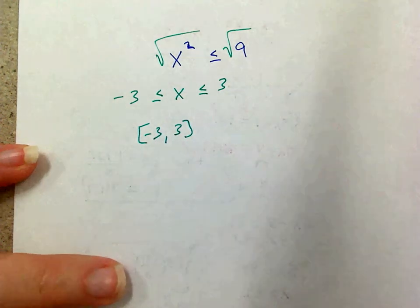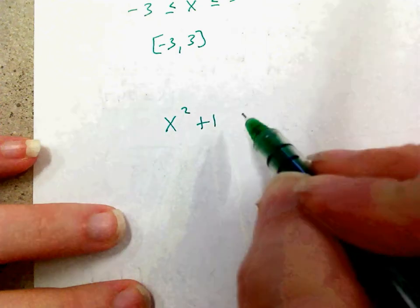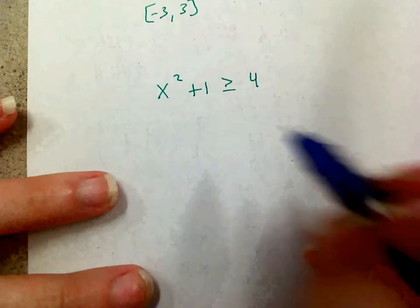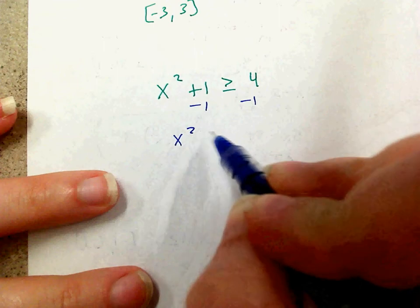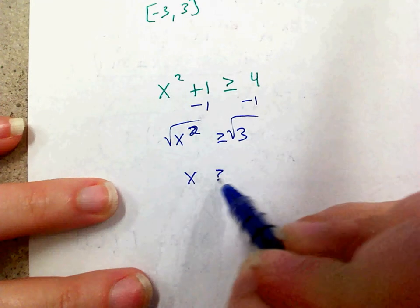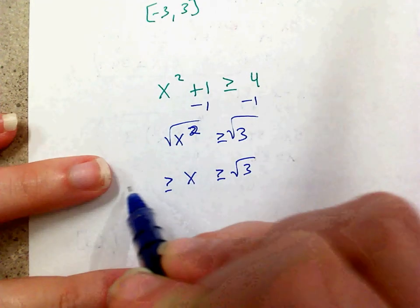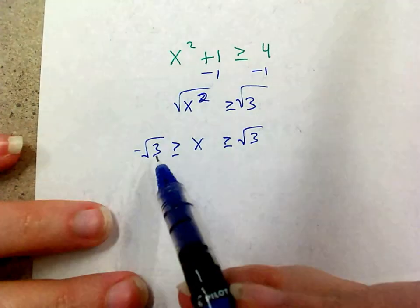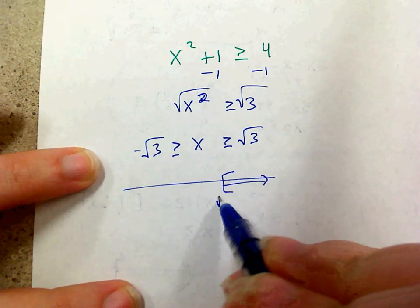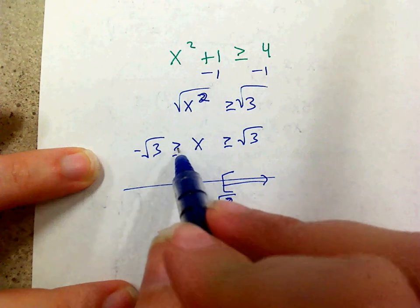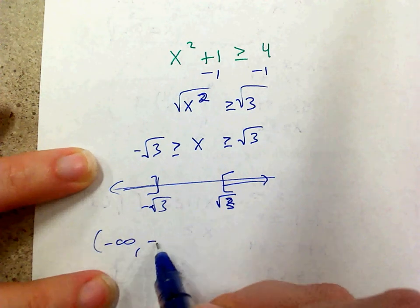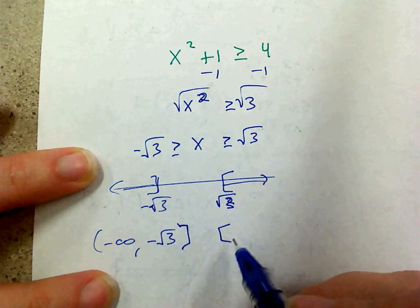If I were working x squared plus 1 greater than or equal to 4, I subtract 1: x squared is greater than or equal to 3. Take the square root: x is greater than or equal to square root of 3, or x is less than or equal to negative square root of 3. Negative square root of 3 is not greater than square root of 3, so this splits into two pieces: from negative infinity to negative square root of 3 with a bracket, then pick back up at positive square root of 3 and go to infinity.